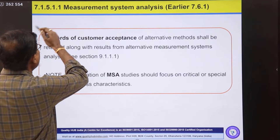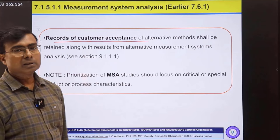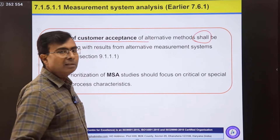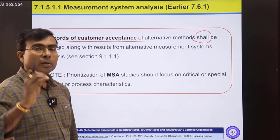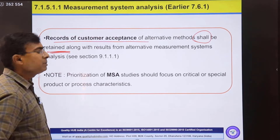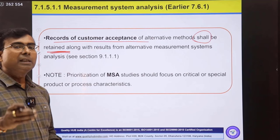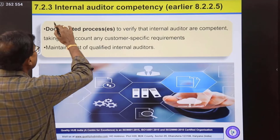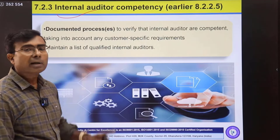In 7.1.5.1.1, IATF talks about having records of customer acceptance of alternative methods — wherever the standard uses the word 'shall,' it is a mandatory requirement. If you don't comply with any 'shall' requirement, you are liable for a non-conformance. Wherever the standard talks about 'retaining' something, it is asking you to keep records as evidence of compliance.